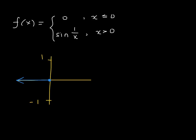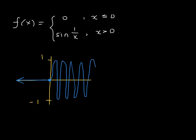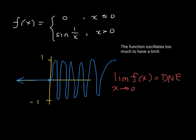To the left of zero, the function values are zero — right on the x-axis. But to the right of zero, with sine of 1/x, the function oscillates between negative one and one. The function never really arrives at any single value to the right of zero — it oscillates too much to have a limit. For this reason, we say the limit does not exist as x values approach zero. The function values are at one, then negative one, one, negative one — it oscillates too much, so function values are not approaching a single value because of that oscillating behavior.